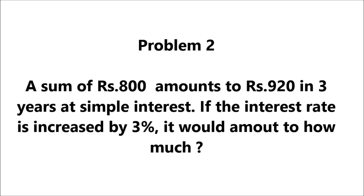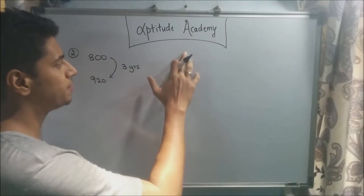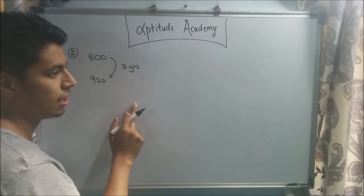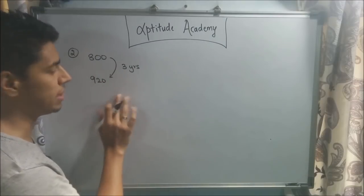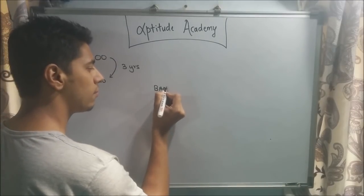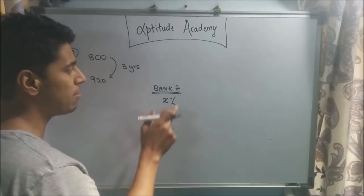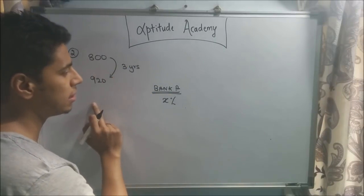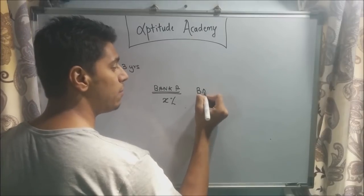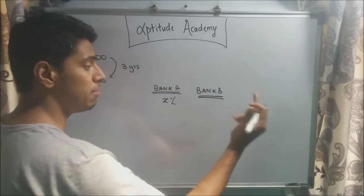Problem two: a sum of rupees 800 amounts to rupees 920 in three years at simple interest. If the interest rate is increased by 3%, it would amount to how much? You went to bank A, deposited 800 rupees, came after three years and received 920 rupees. The problem asks: if there was another bank B offering x plus 3 percent, what would you get after three years?